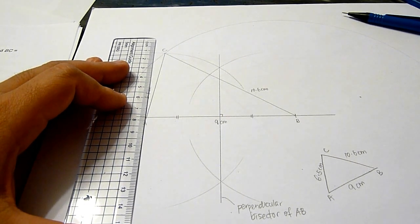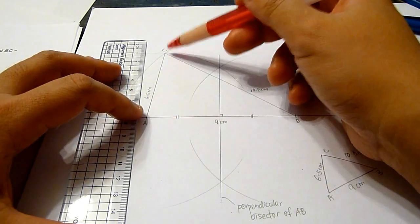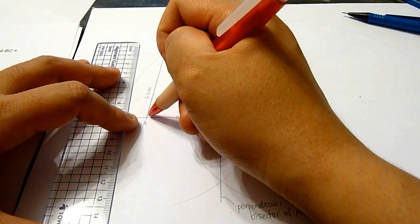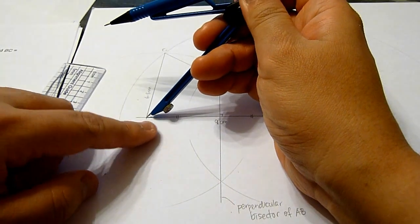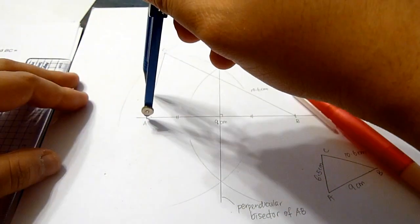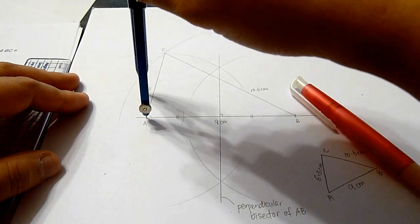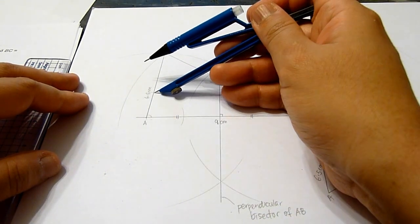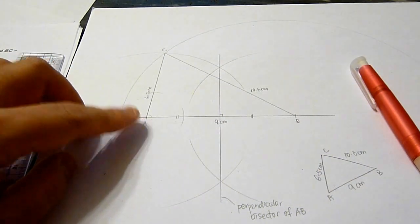Part B asks for an angle bisector of angle BAC. Angle BAC is here. Now, place the compass at point A and mark two arcs. These two arcs will give you points which are equal distance from point A.